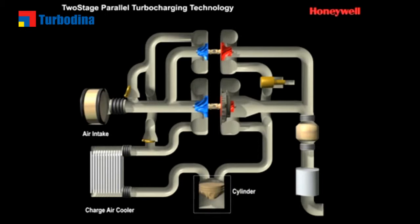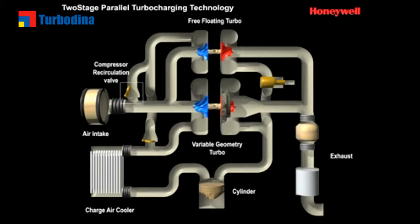The primary turbo, usually a variable geometry VNT, provides the boost at low engine speeds, in essence functioning as a mono-turbo, with a setup that includes all the key components of a conventional single-turbo system.